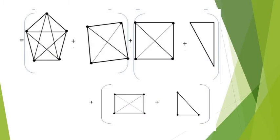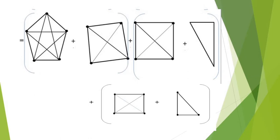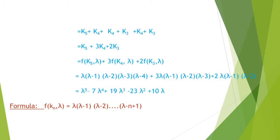We proceed this way until all graphs are complete. For this given graph, we eventually obtain one K5, three K4s, and two K3s. Applying the chromatic polynomial formula for complete graphs — f(Kn, lambda) = lambda(lambda-1)(lambda-2)...(lambda-n+1) — we get the final result: lambda^5 - 7*lambda^4 + 19*lambda^3 - 23*lambda^2 + 10*lambda.